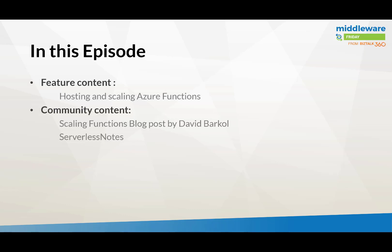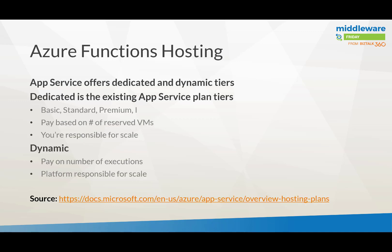In this episode I'd like to talk about hosting and scaling of Azure Functions, and also discuss some of the new content available around scaling and Azure Functions in general. Azure Functions basically offers two ways of hosting your functions in Azure, so you can reserve some compute either through dedicated and dynamic tiers. In the app service plan you can have tiers like basic, standard, premium, isolated, and you pay based on the amount of resources you reserve for virtual machines — and you are responsible for scale.